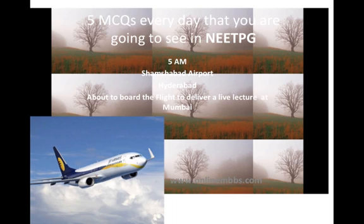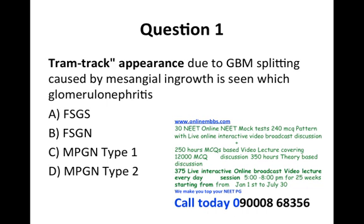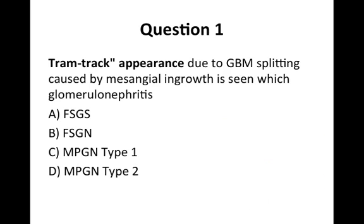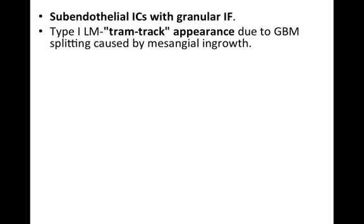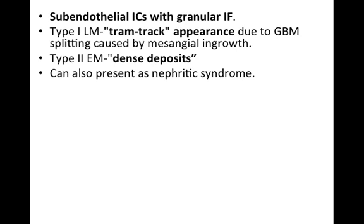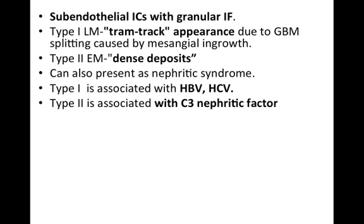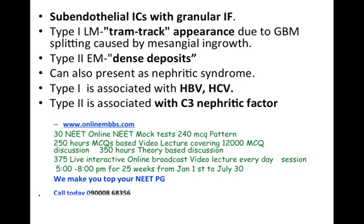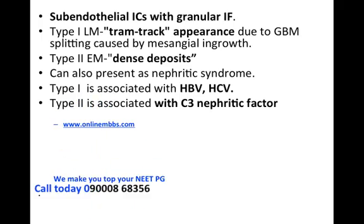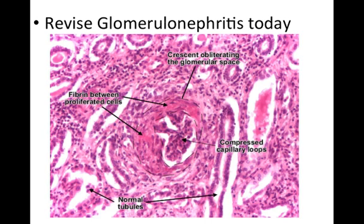For today I'm going to give you five sure questions which are going to come in tomorrow's exam. Tram-track appearance due to GBM splitting — it is caused by mesangial ingrowth. This feature, where do you see it? In which type of glomerulonephritis? MPGN type 1 or MPGN type 2? Type 1 is associated with HBV and HCV, and type 2 is associated with C3 nephritic factor. Revise glomerulonephritis today — it is going to come in tomorrow's NEET-PG exam.